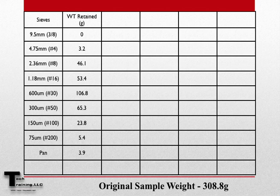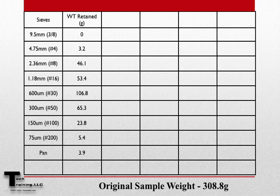Let's now go through an example of how to perform these calculations. Let's assume that we have done a fine aggregate sieve analysis, and the original sample weight was 308.8 grams. We have put this sample through the sieve shaker and accumulated the following masses on each sieve: no grams retained on the 9.5mm sieve, 3.2 grams on the 4.75mm sieve, 46.1 grams on the 2.36mm sieve, and so on.